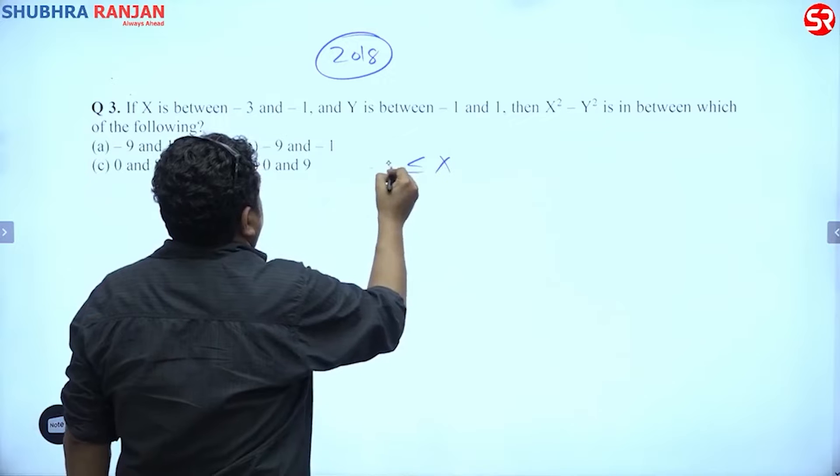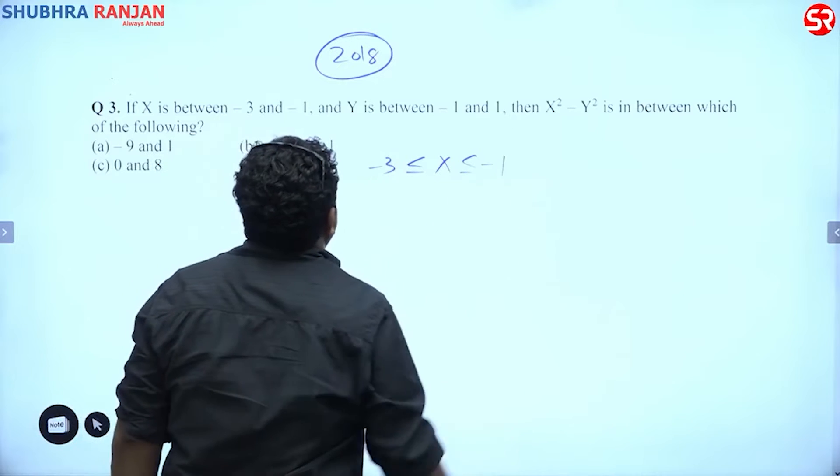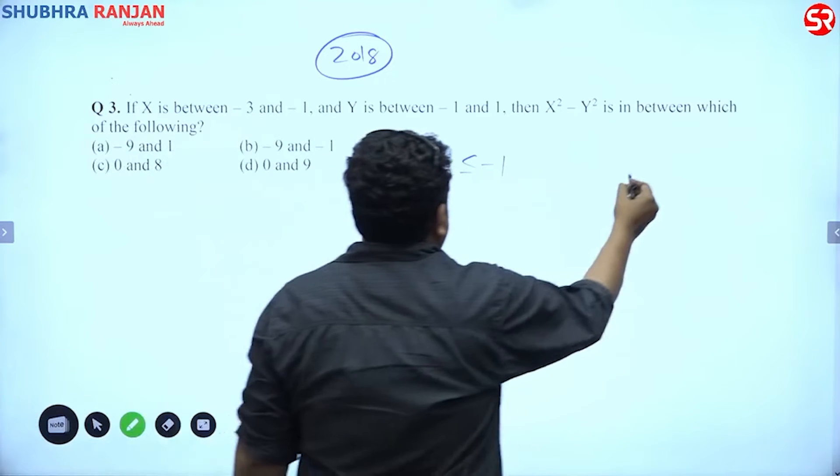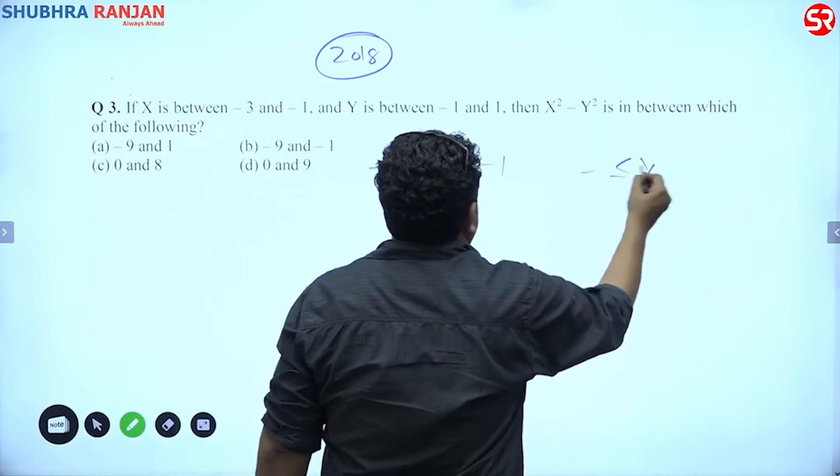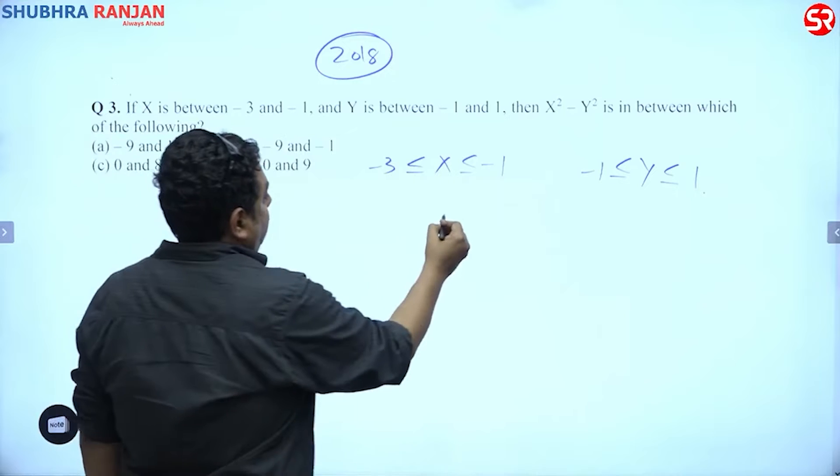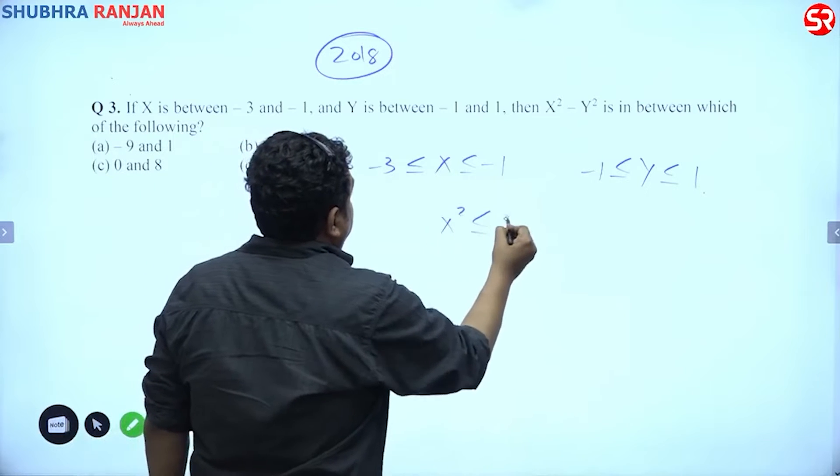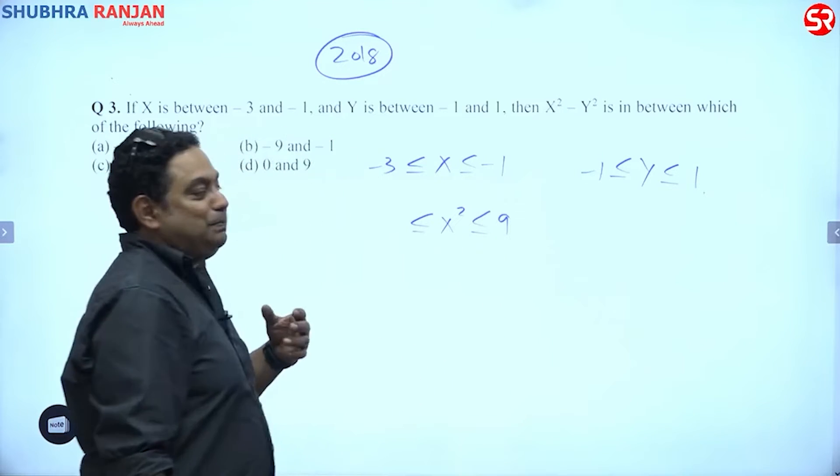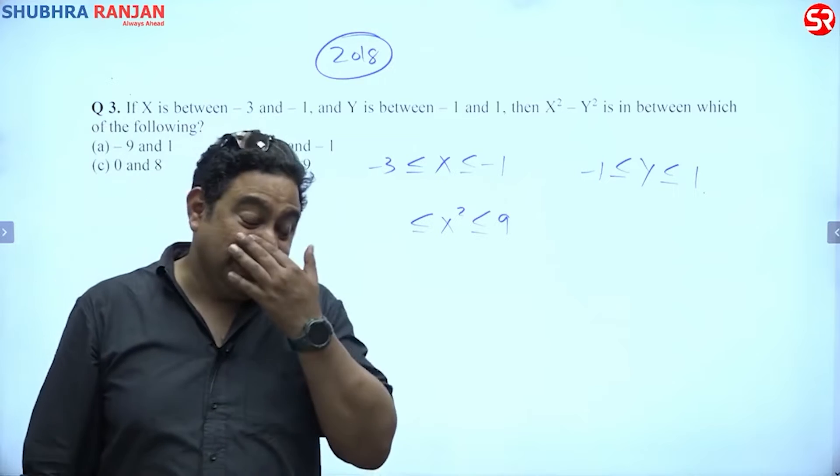minus 3 to minus 1 and y lies between minus 1 to 1. So x square minus y square lies between what? So x square would lie between 9 and most of you would do equal to 1, right? Now